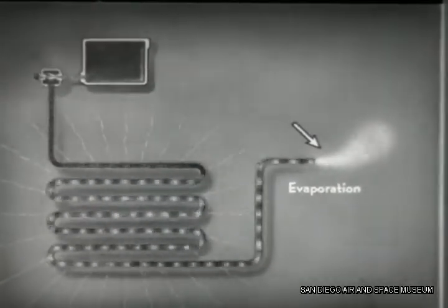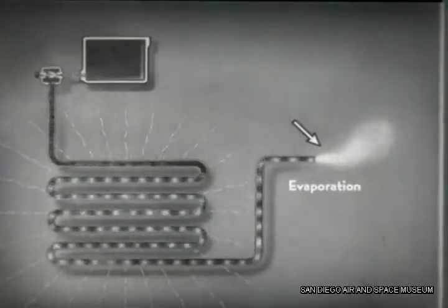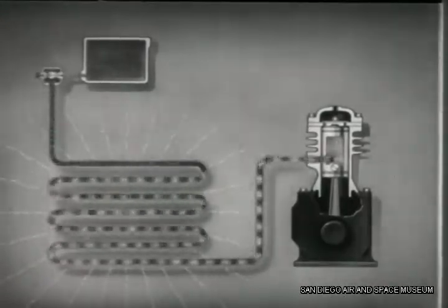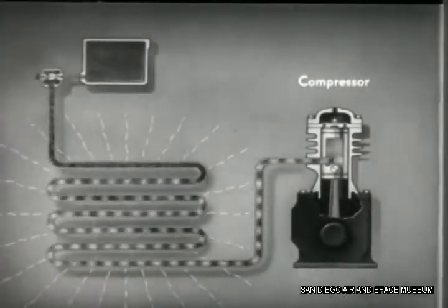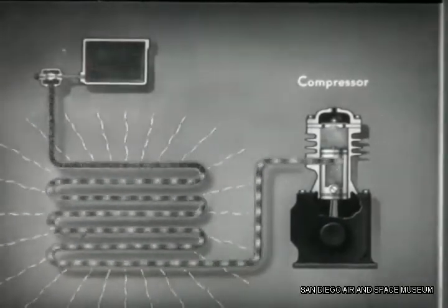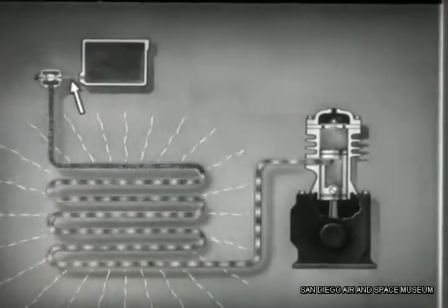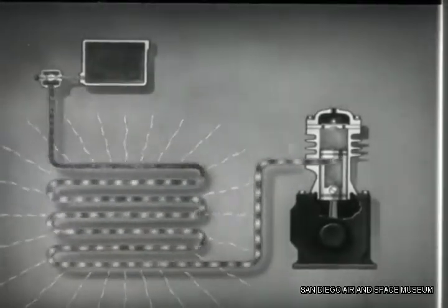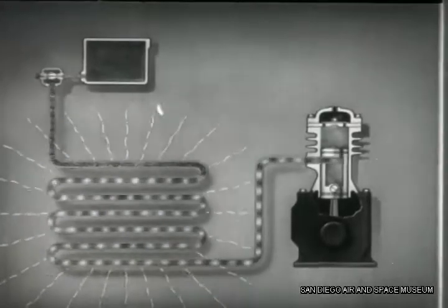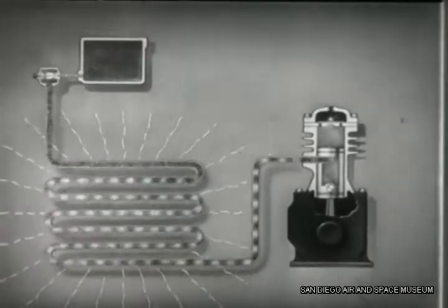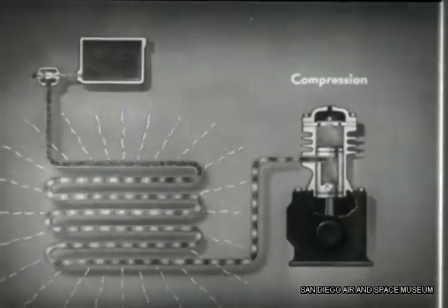The refrigerant has now done its cooling job. But we can't just pipe it overboard — not at a dollar a pound we can't. So now we have to get the heat out of it and use it over again. To do this, we feed the refrigerant gas into a compressor. The compressor raises the pressure of the gas, bringing it back up to the pressure of the liquid refrigerant we started with. In order to have a continuous flow, two or more cylinders are used in the compressor. This then is the third stage of the refrigeration process: compression.